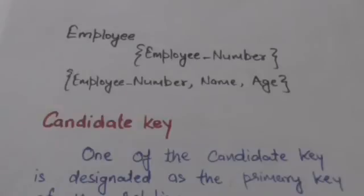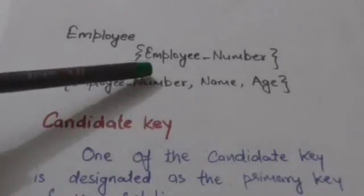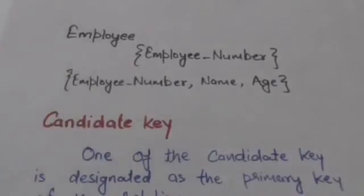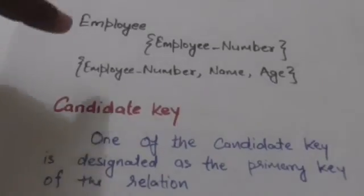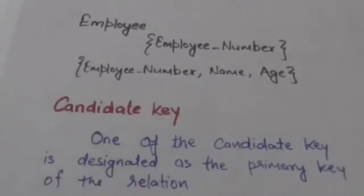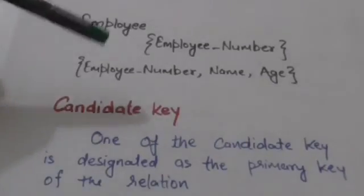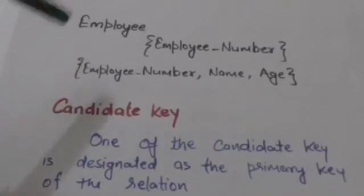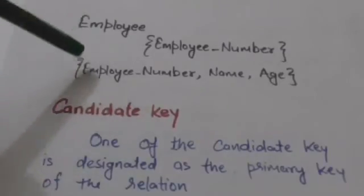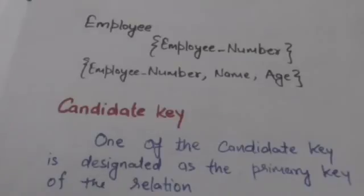This attribute set is a key of the employee relation because no two tuples can have the same value for employee number. Now see this attribute set — it is a super key, because no two tuples can have the same combination of values for these attributes.